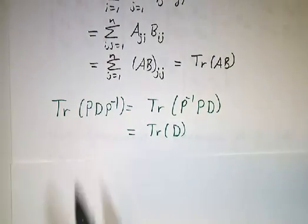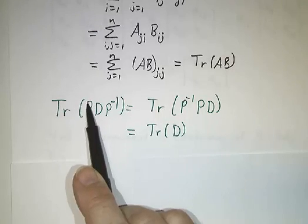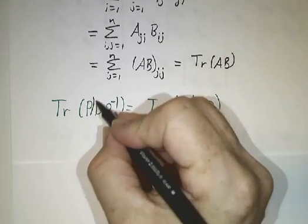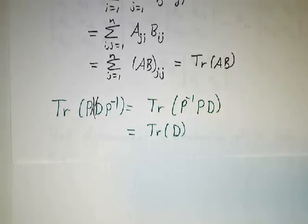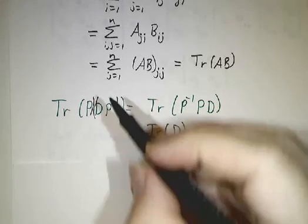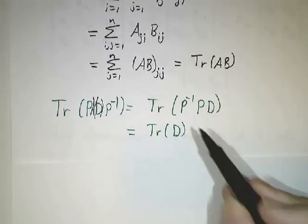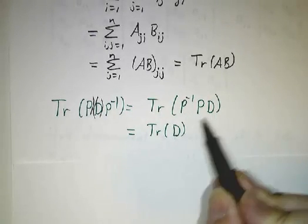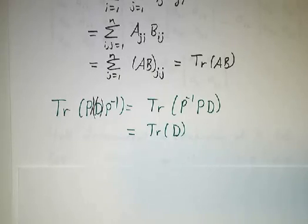That means if you look at the trace of PDP inverse, you can think of that as P times DP inverse, or if you prefer PD times P inverse, so you put the P inverse on the other side. P inverse times P times D is just D. And we're done. It works.